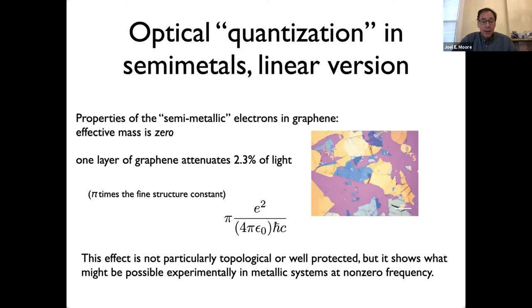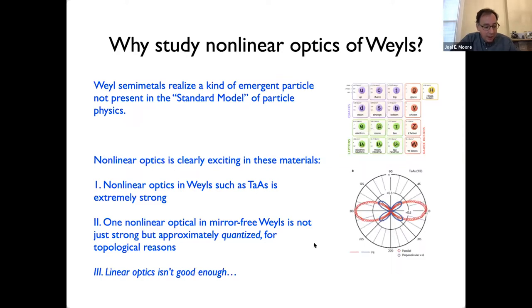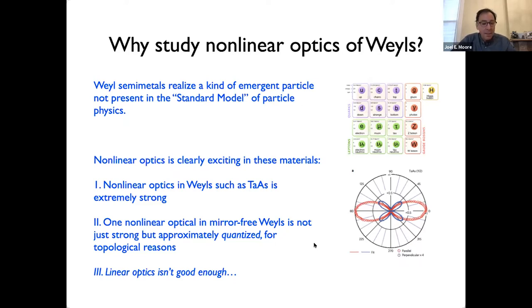The original reason for caring is that the low-energy electrons in these semi-metals are like three-dimensional versions of graphene. In particular they have a kind of massless fermionic particle not present in the standard model — historically people hoped the neutrino would be an example of this Weyl fermion, but it turns out not to be. Practically, taking tantalum arsenide as the benchmark Weyl semi-metal, even standard non-linear optical properties are extremely strong — as strong as in any other material.